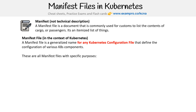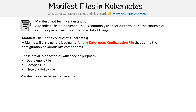These are all files with specific purposes — like a deployment file, pod spec file, or network policy file. And manifest files can be written either in YAML or JSON.